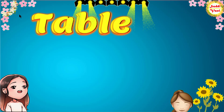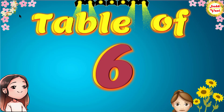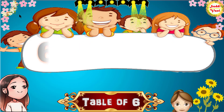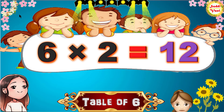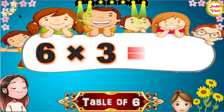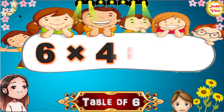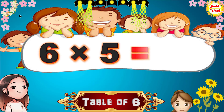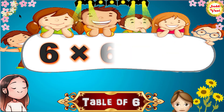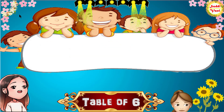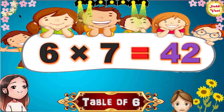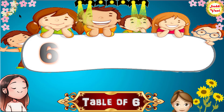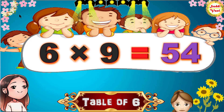Hello Children, we will learn Table of 6. 6 1s are 6, 6 2s are 12, 6 3s are 18, 6 4s are 24, 6 5s are 30, 6 6s are 36, 6 7s are 42, 6 8s are 48, 6 9s are 54.